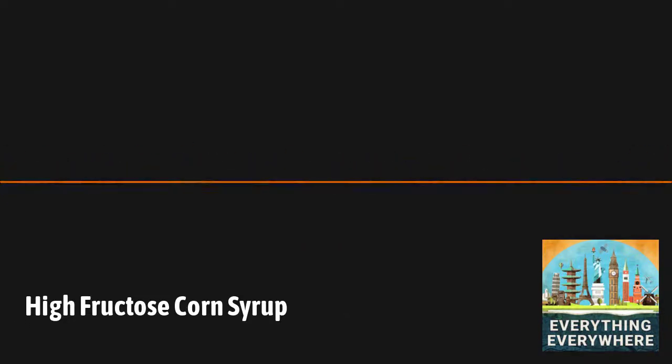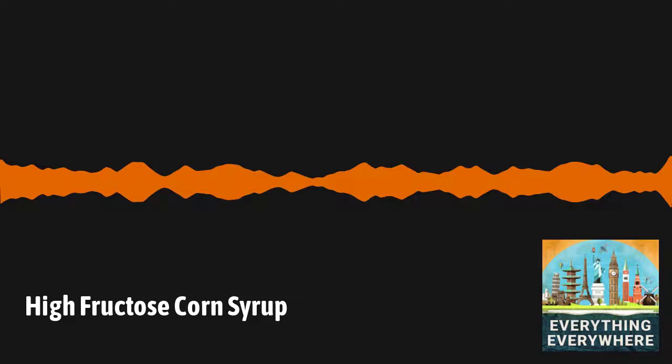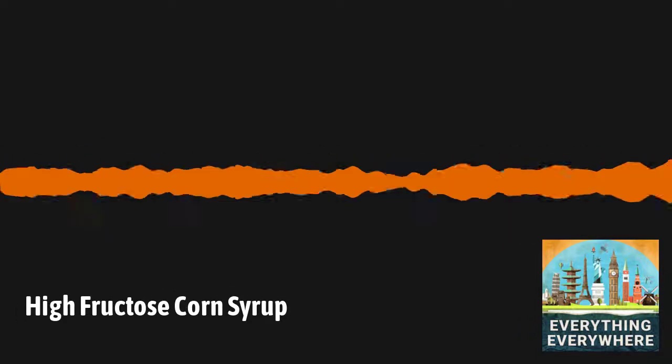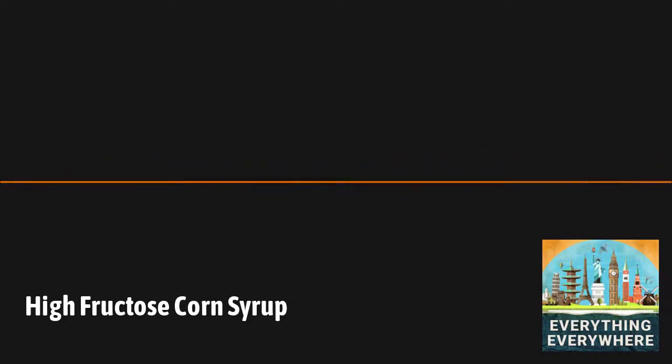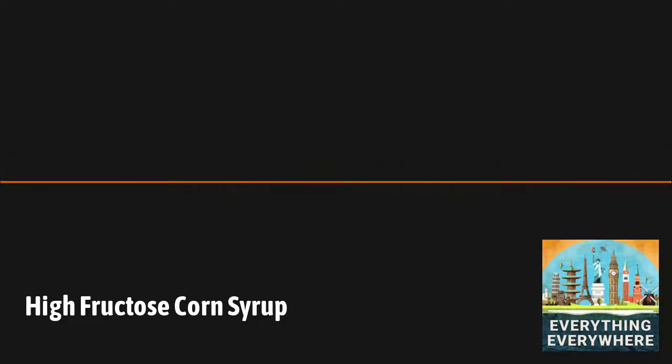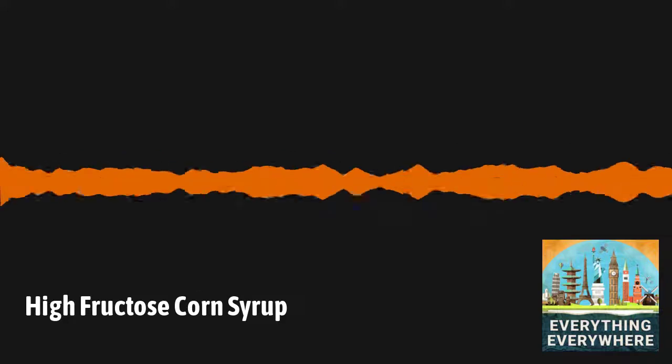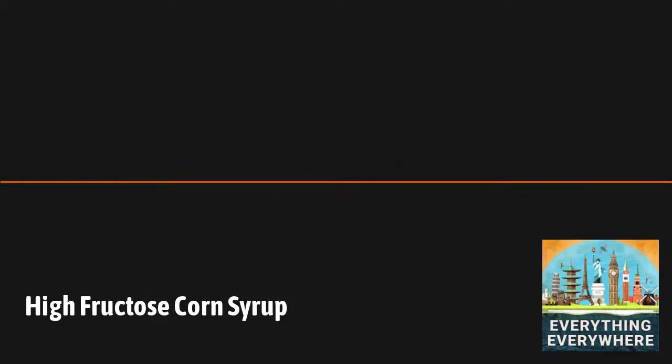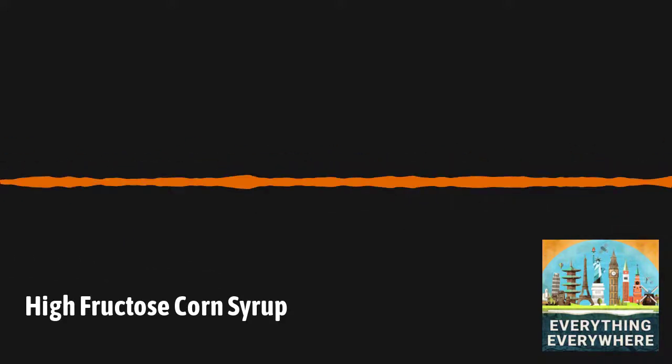By 1984, both Coke and Pepsi had switched from sugar to high fructose corn syrup as the sweetener for their soft drinks. While they didn't run advertisements announcing the switch, they also weren't really hiding the fact. There were write-ups in publications like the Wall Street Journal, and to be completely honest, most people had no idea that the sweetener had been changed.